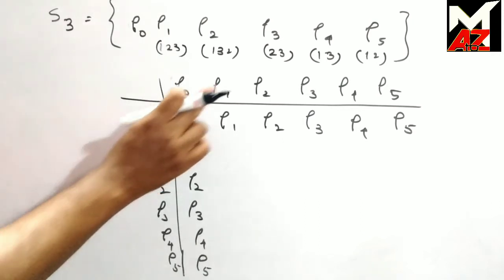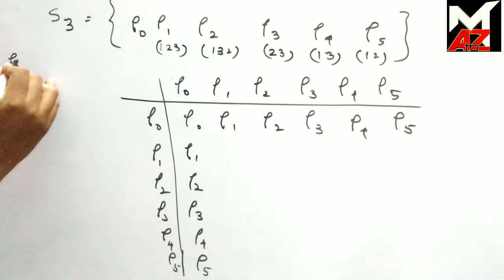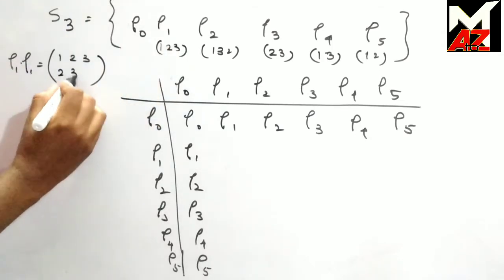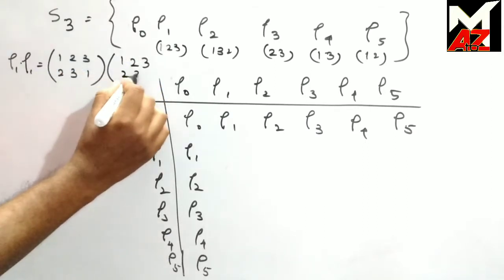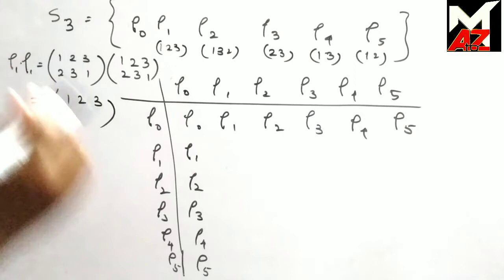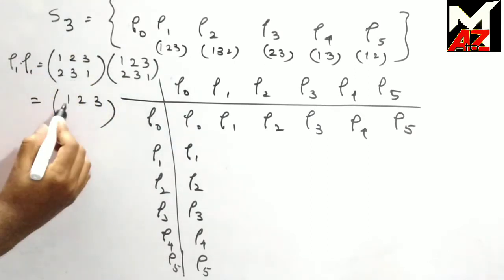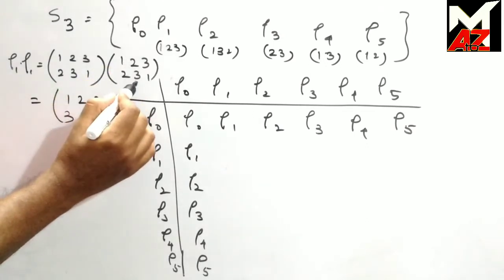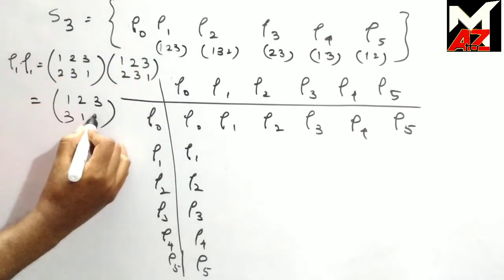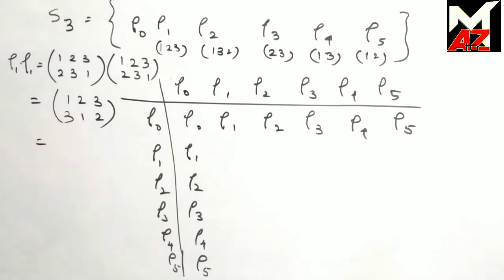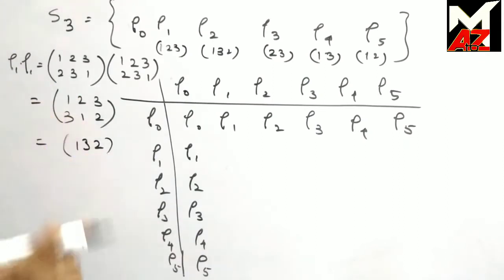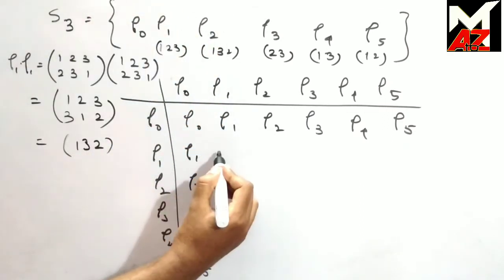Now we multiply ρ1 and ρ1. ρ1 = (1 2 3 / 2 3 1): 1 goes to 2, 2 goes to 3, 3 goes to 1. Applying ρ1 again: 1→2→3, 2→3→1, 3→1→2. So ρ1∘ρ1 maps 1→3, 2→1, 3→2, which is the cycle (1 3 2) — that is ρ2. So ρ1∘ρ1 = ρ2.